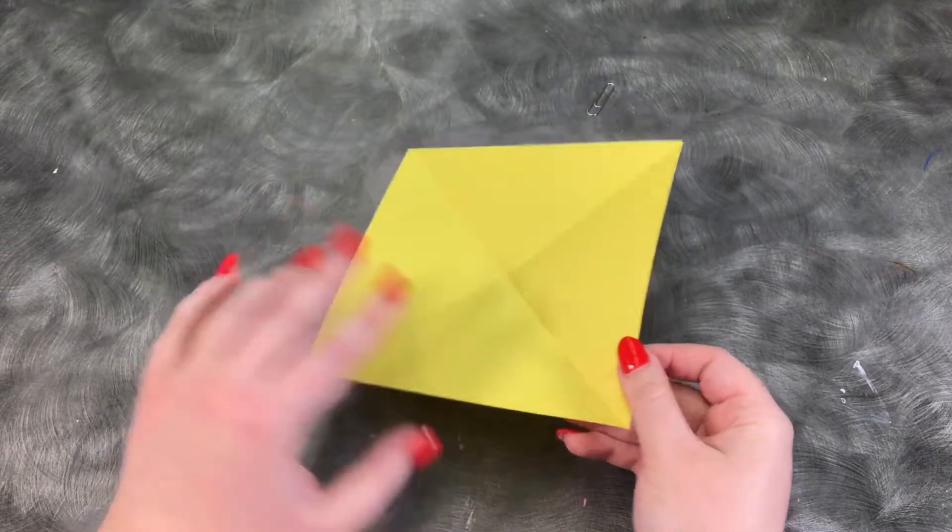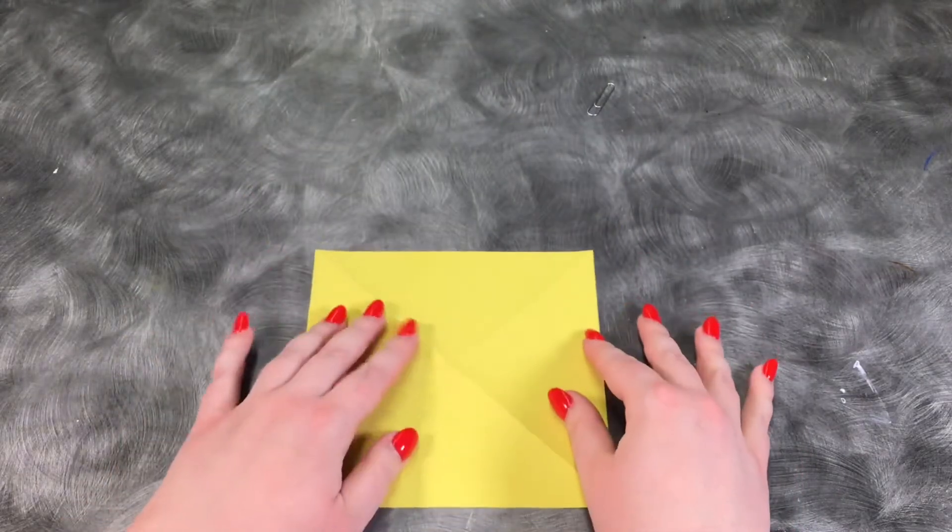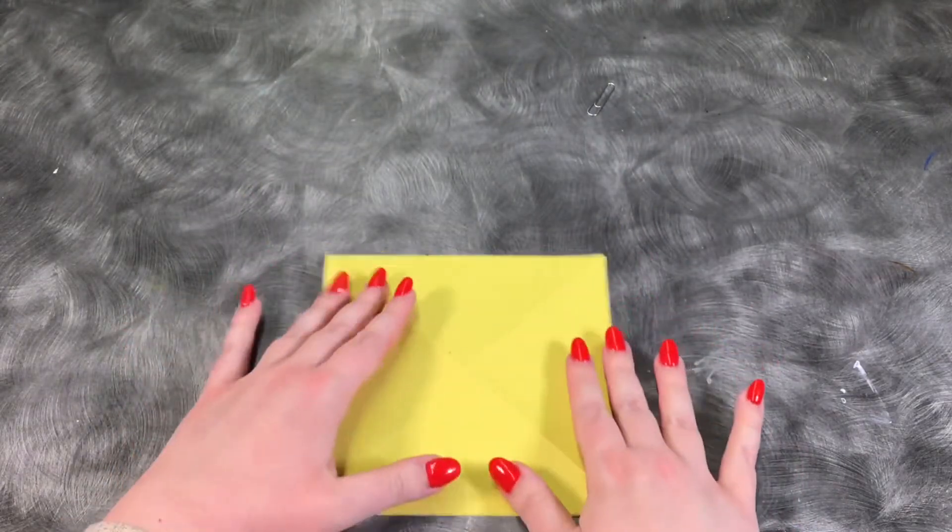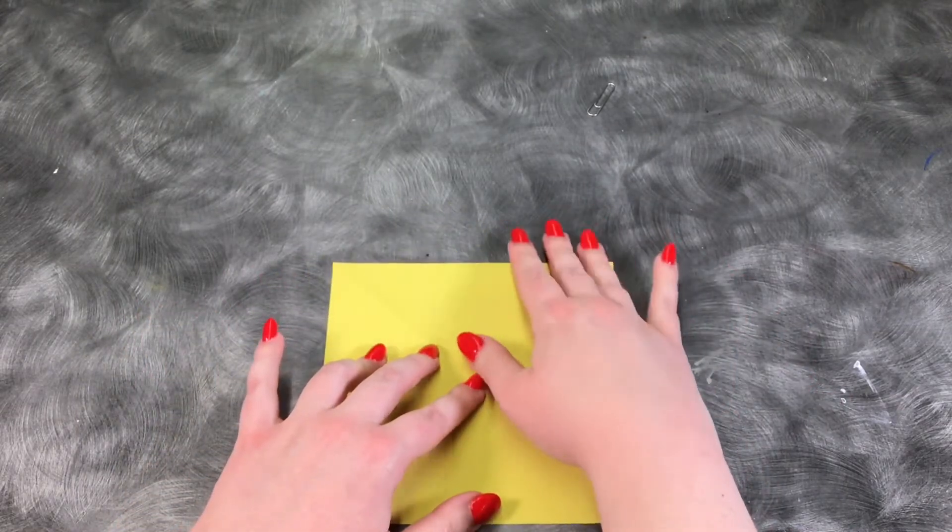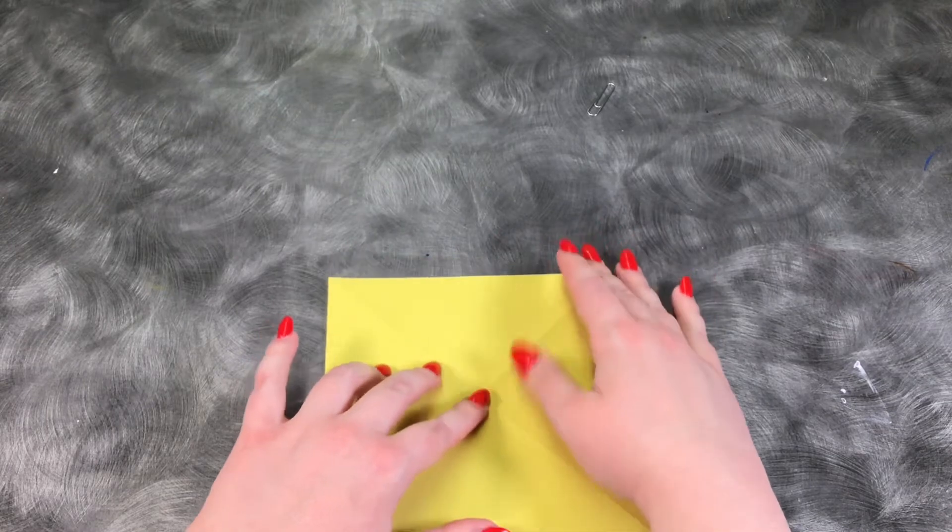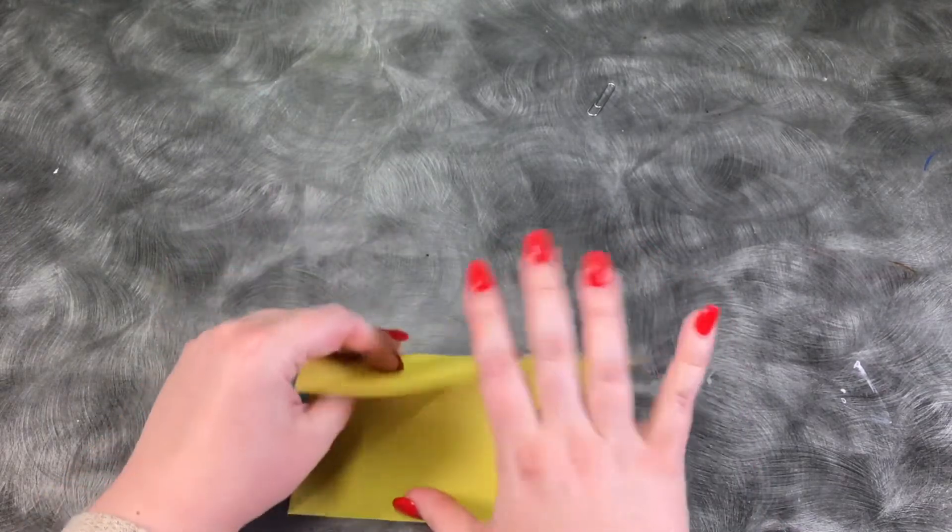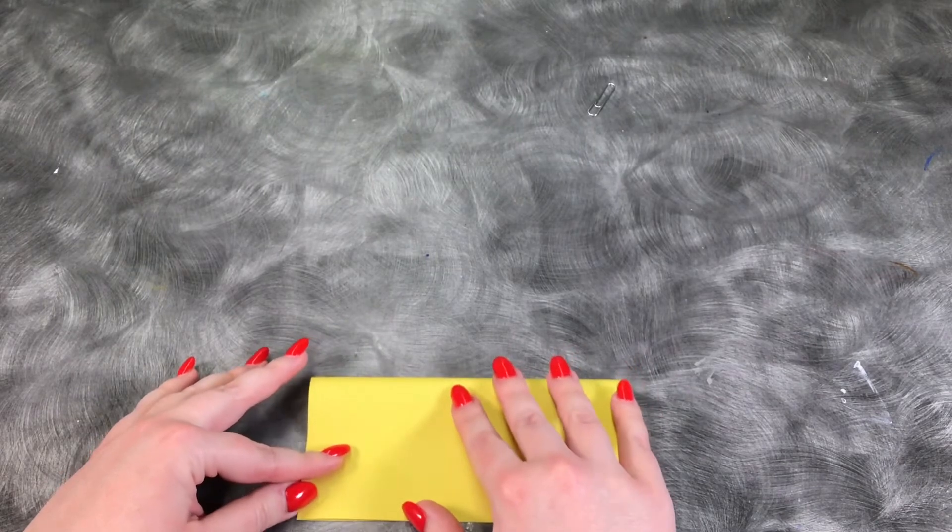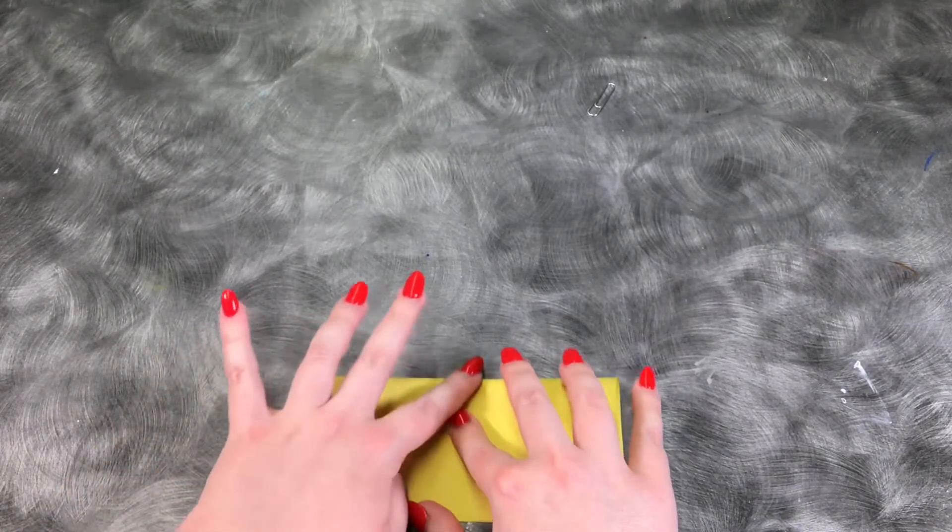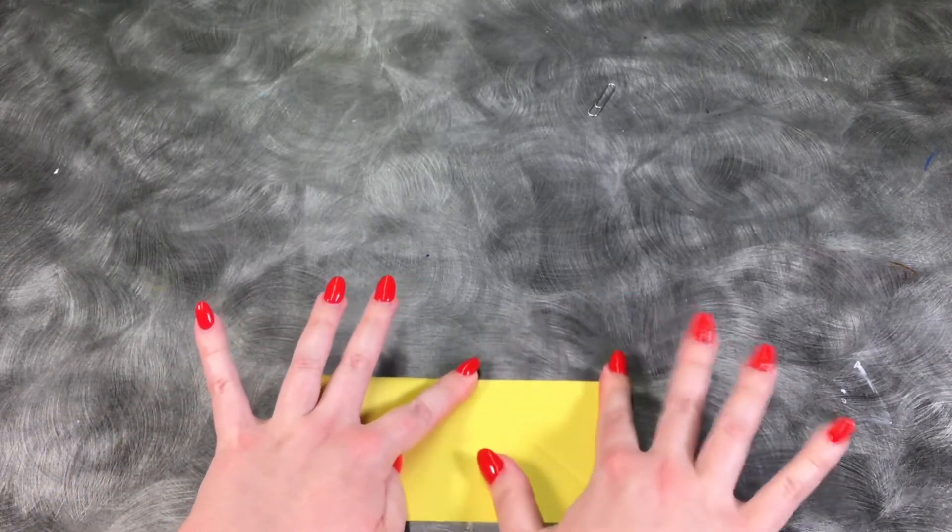Now flip it over so those folds that you made are poking up. And fold it in half, you know square ways and not diagonally, and crease, and unfold.